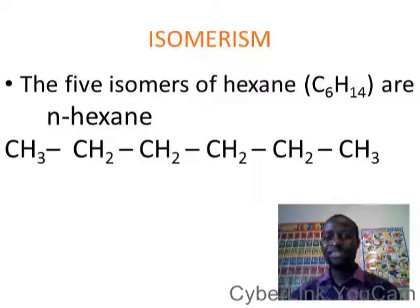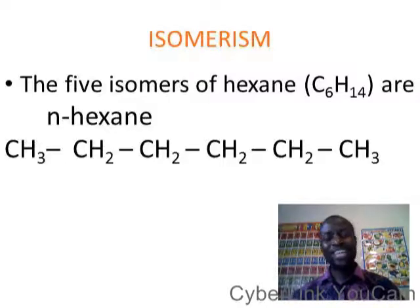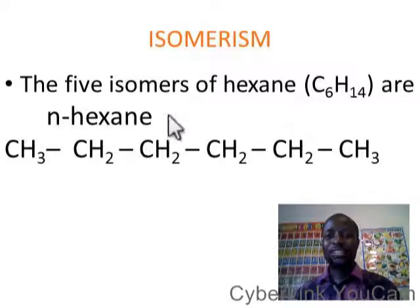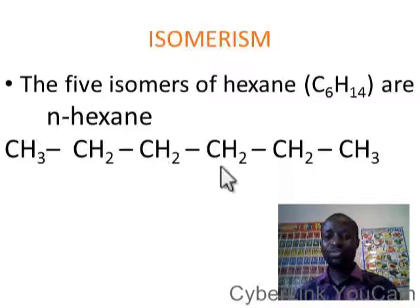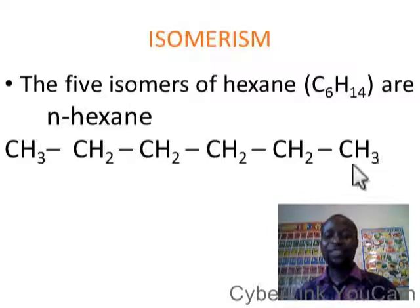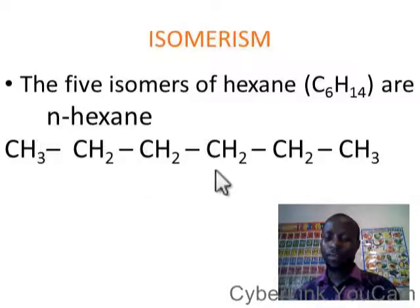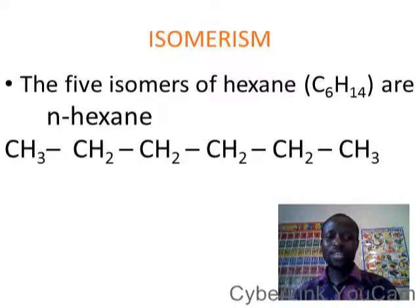Hexane is an alkane compound with six carbon atoms. The first isomer is hexane itself: CH3-CH2-CH2-CH2-CH2-CH3. You can also write it as CH3 with CH2 in brackets to the power of 4, then CH3.